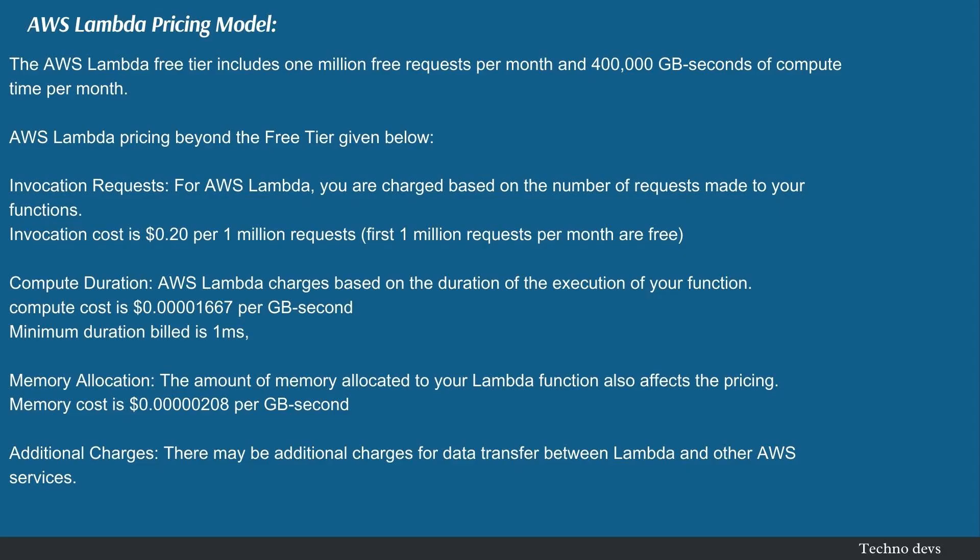AWS Lambda pricing model: The AWS Lambda free tier includes 1 million free requests per month and 400,000 GB-seconds of compute time per month. Beyond the free tier, invocation requests are charged at 20 cents per 1 million requests, with the first 1 million requests per month being free. Compute duration is charged at $0.000001667 per GB-second, with a minimum duration of 1ms. Memory cost is $0.00000208 per GB-second. There may also be additional charges for data transfer between Lambda and other AWS services.